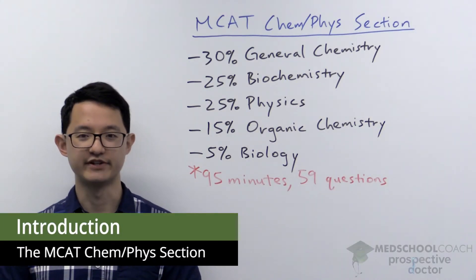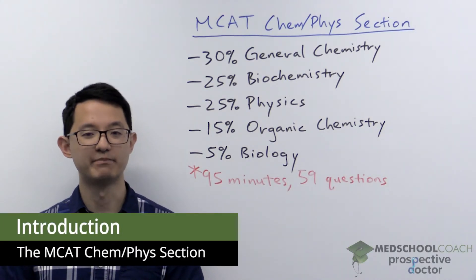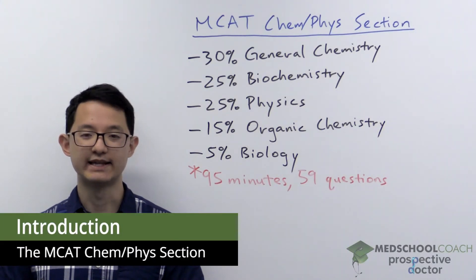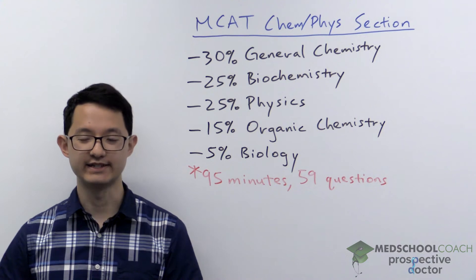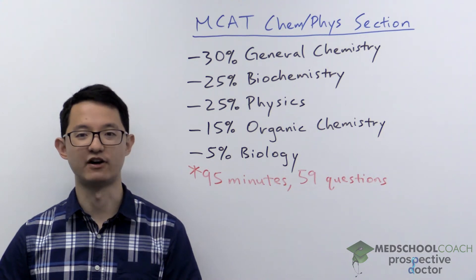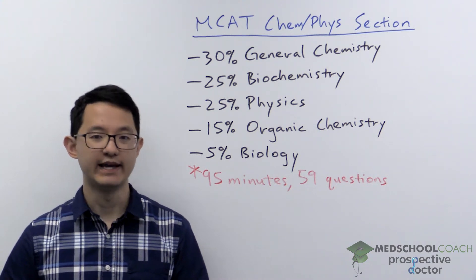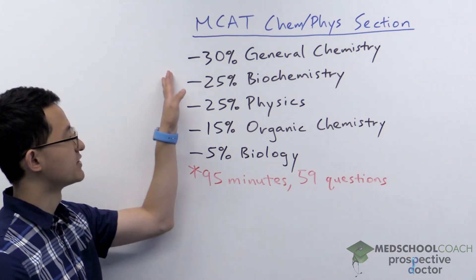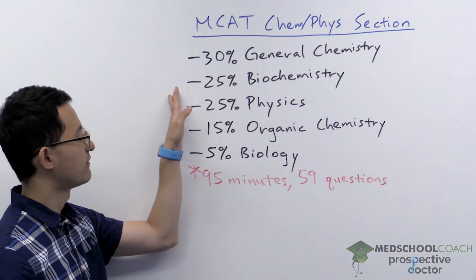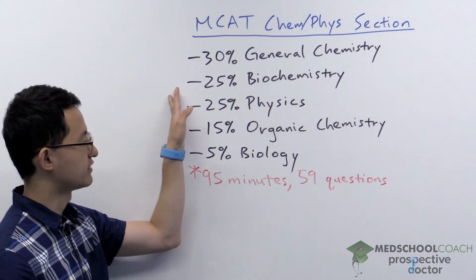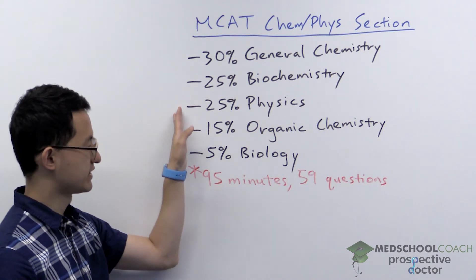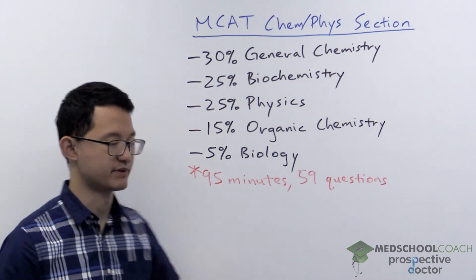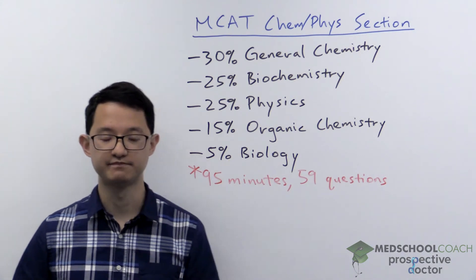In this video we're going to go over the MCAT ChemPhys section. The ChemPhys section is the first section on the MCAT and it is 30% general chemistry, 25% biochemistry, 25% physics, 15% organic chemistry, and 5% biology.